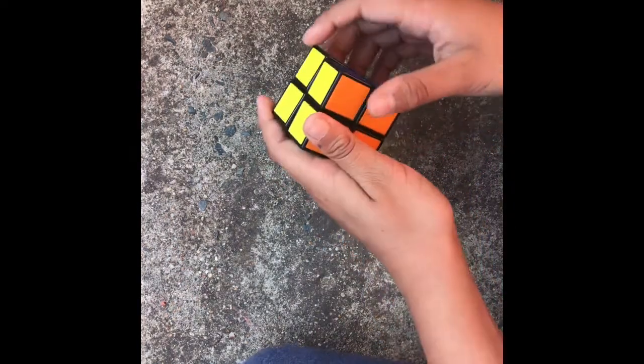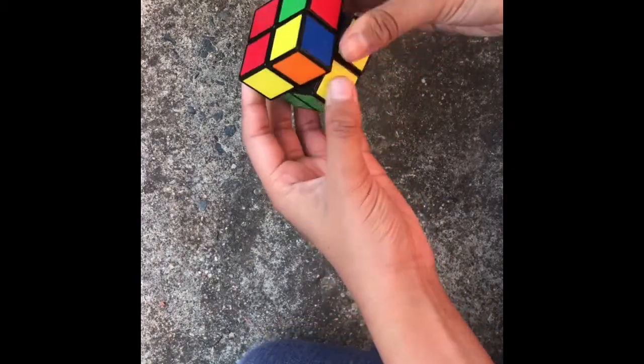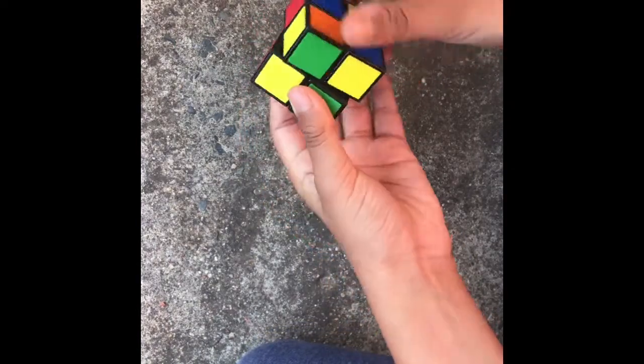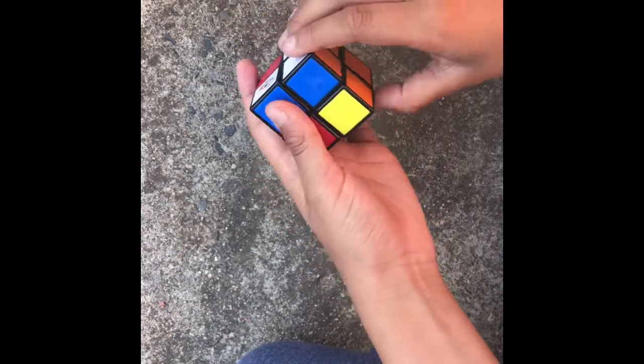These three methods are very similar in the order that you do them. I'm going to compare some similarities. For Ortega and EG, you start off by making just a side. Let me just do that real quick. So you start off by making a side, not necessarily a layer.